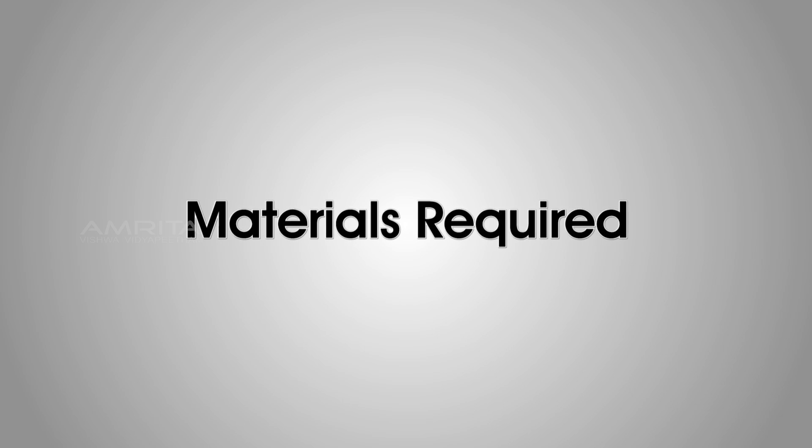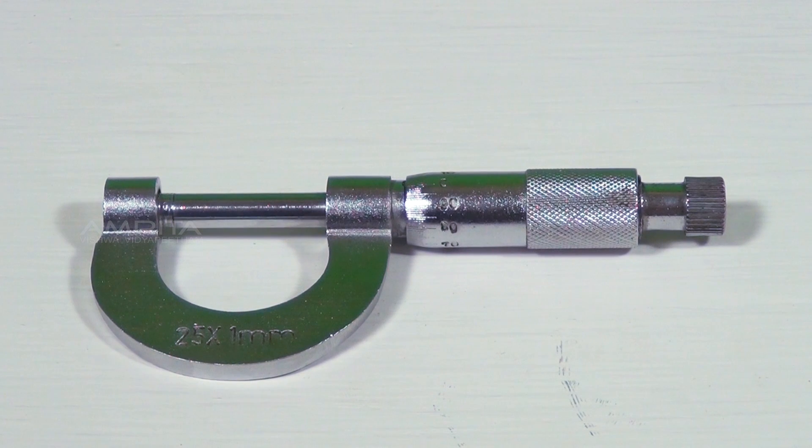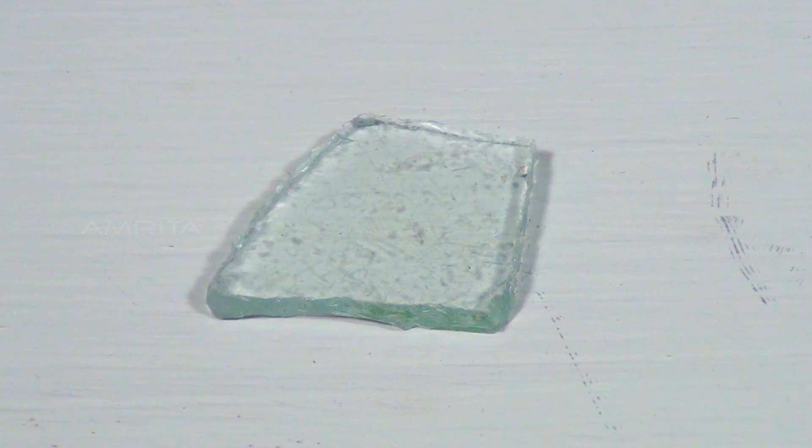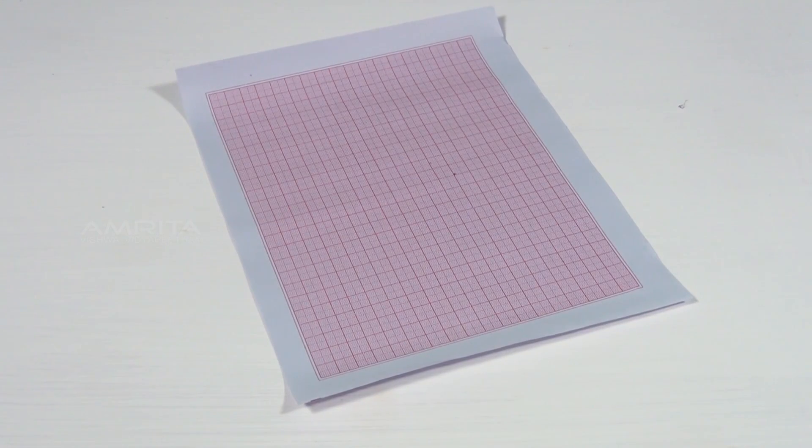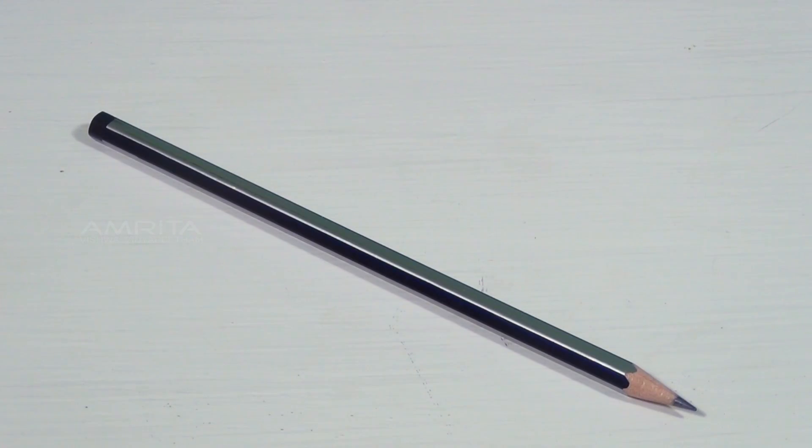Materials required: Screw gauge, wire, a sheet of paper, an irregular laminar, a centimeter graph paper, a pointed pencil.